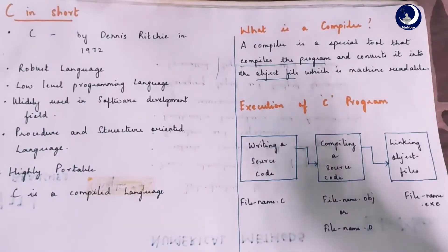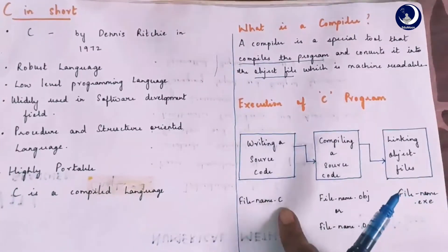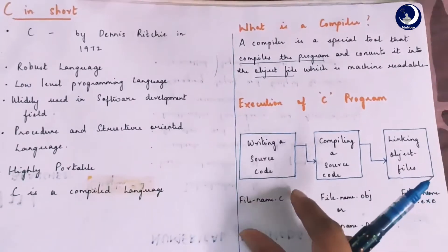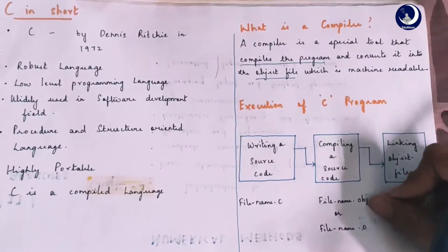How does a compiler actually take part in the execution of a C program? Initially, we will write the source code and save the file using the .C extension. This written source code is compiled using a compiler as an object file.